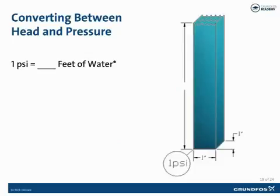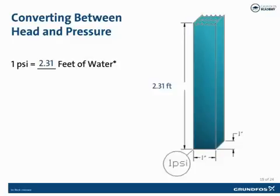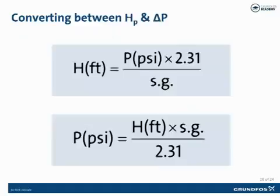The second component of calculating total dynamic head is pressure. Since centrifugal pumps are not rated in PSI but rated in feet of head, we need to convert from PSI to feet of head. In the example shown here, we have a tube that is one inch by one inch, which is one square inch. In order to read one PSI at the bottom of this tube, we would have to fill the column with water to an elevation of 2.31 feet tall. Therefore, the conversion for water between 32 and 60 degrees Fahrenheit is: one PSI equals 2.31 feet of head. The formula is PSI times 2.31 divided by the specific gravity of the fluid to get feet of head.